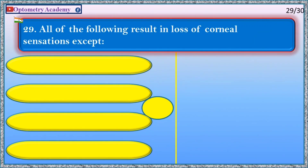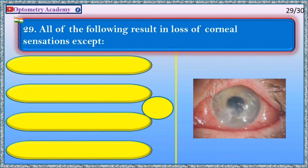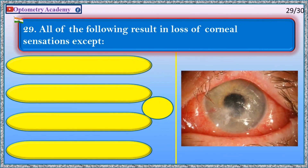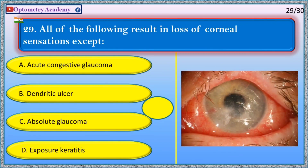All of the following result in loss of corneal sensations except: A. Acute congestive glaucoma, B. Dendritic ulcer, C. Absolute glaucoma, D. Exposure keratitis.